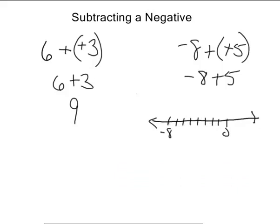Negative 8, we go plus 5, so we come back up 1, 2, 3, 4, 5. That puts us right here at negative 3.